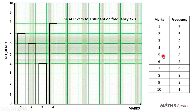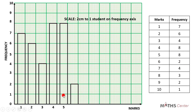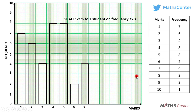For mark five, the frequency is also eight so the height of the bar will be at eight. The next one is mark six — the frequency is two so the height of the bar will be at two. For mark seven, the frequency is four so the height of the bar will be at four. For mark eight, the frequency is three so the height will be at three.